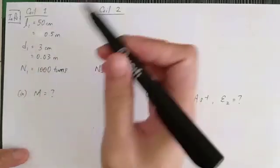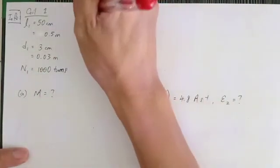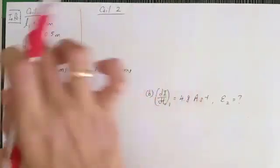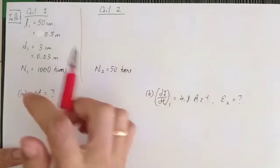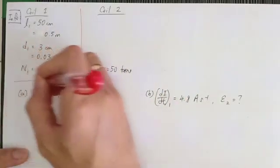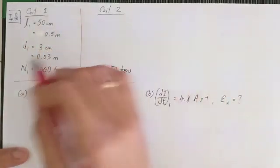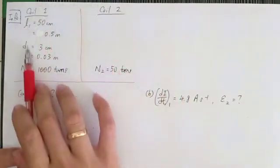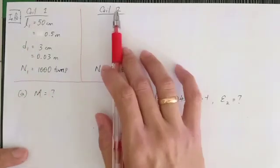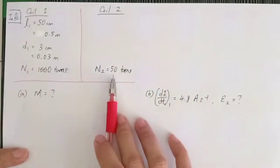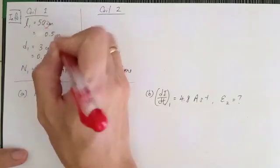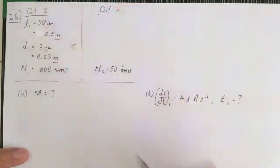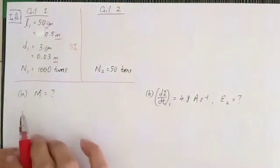The information is separated into two columns — one for coil one, one for coil two. When you have two different objects, gather them into two columns to find your information more easily. Remember to always convert centimeters to meters and use SI units.